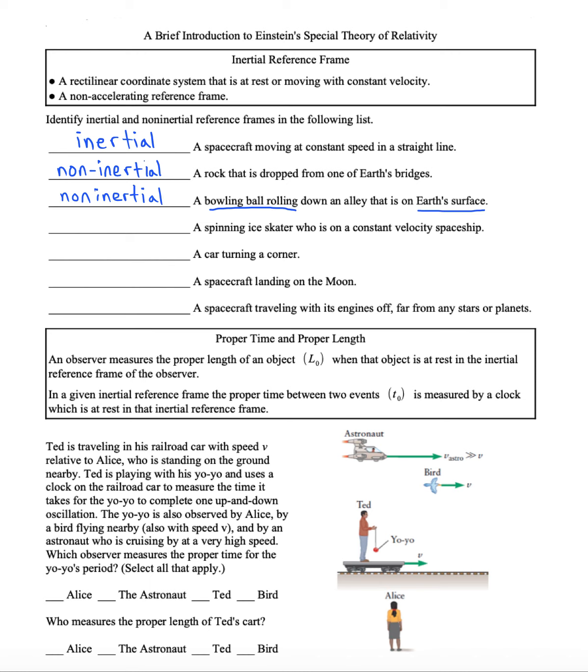How about a spinning ice skater who's on a constant velocity spaceship? That's good that the spaceship is at constant velocity, but the ice skater is spinning. That involves centripetal acceleration. So I'm going to say non-inertial.